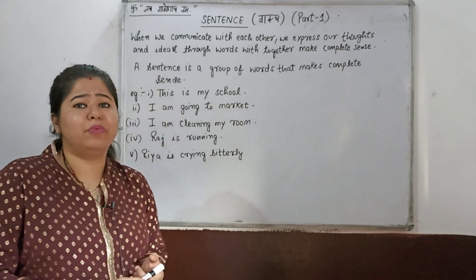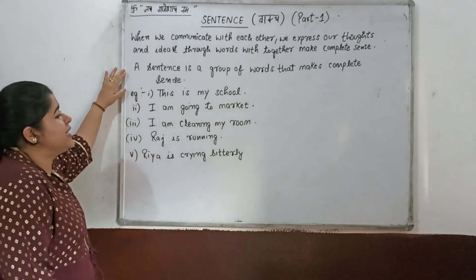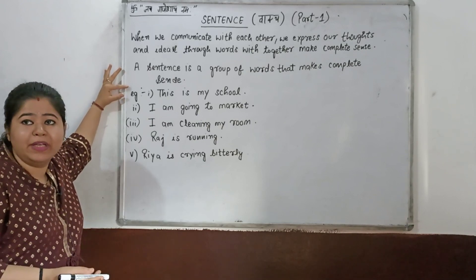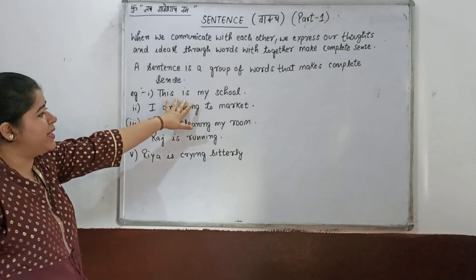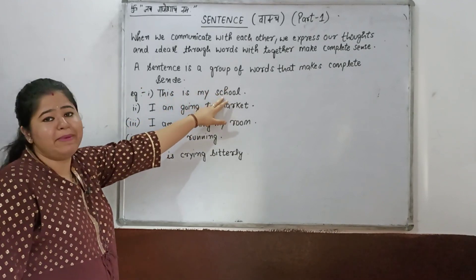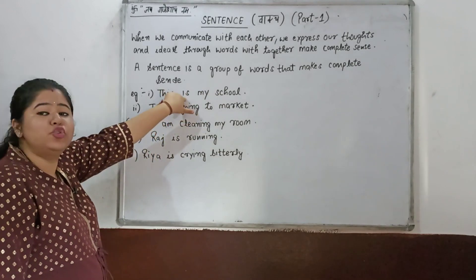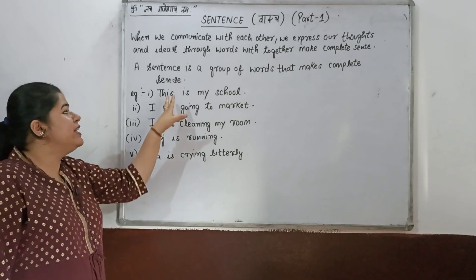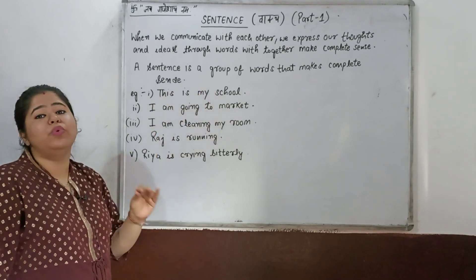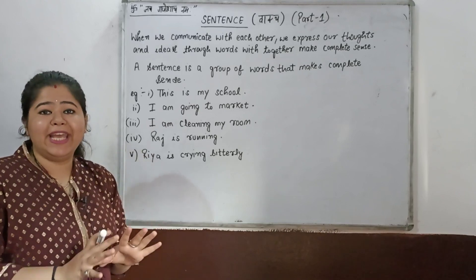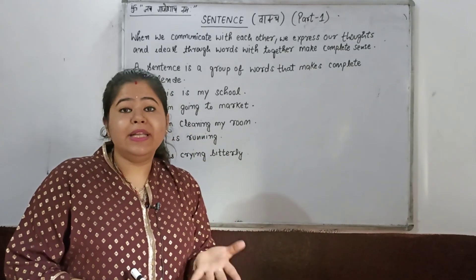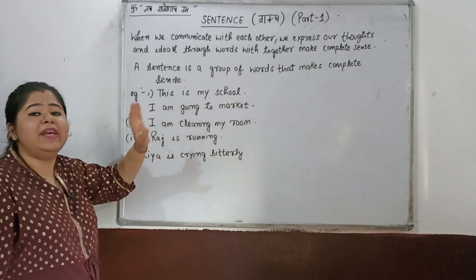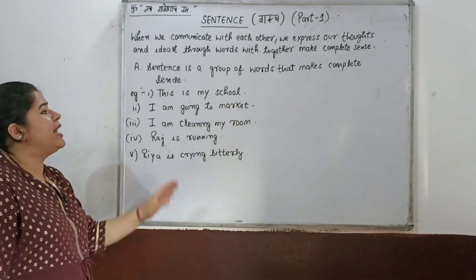I hope I can clear this point. For example: 'This is my school.' Four words are made here. After reading this, it makes complete sense — I am making a sentence. This is my school — this is a sentence.